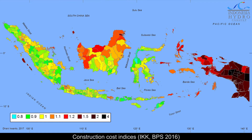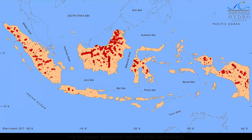Developers must consider the development cost of hydropower for every region. This map shows the construction cost indices, or IKK, published by the Central Board of Statistics in 2016, which can be used to illustrate the development cost in every region in Indonesia. The potential indices are then corrected in consideration of the development cost, as shown on this map.